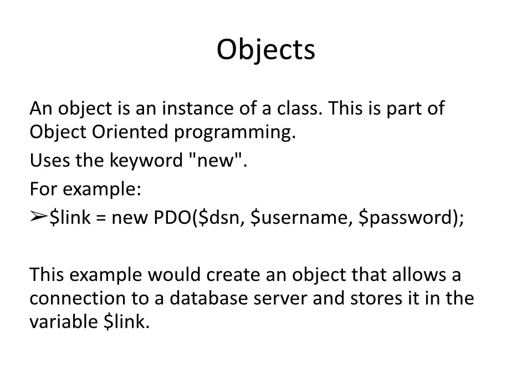Another primitive data type is an object. An object is an instance of a class, which is part of object-oriented programming. Using a variable to store an instance of a class requires the keyword new. In the example provided, the variable link is being assigned an instance of the PDO class. So, new PDO creates a new instance of the class, and the PDO class has three required attributes: the variables DSN, username, and password. The example provided would create an object that allows a connection to a database server, storing it into the variable link for use in further PHP interactions.